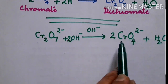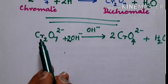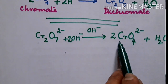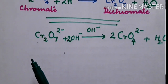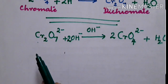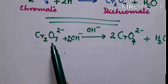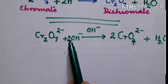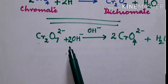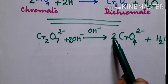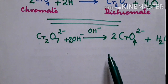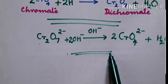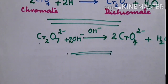Hydrogens become two on both sides, chromium two on both sides, oxygen nine — so it is atom-wise balanced. The charge on the left is two minus and two minus, total negative four. On the right side it is two into two minus, so also negative four. This is the balanced equation.